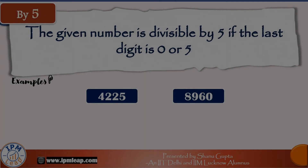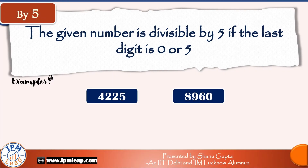The divisibility rule for 5 is very simple: a number is divisible by 5 if its last digit is 0 or 5. For 4225, the last digit is 5 — yes, divisible. For 8960, the last digit is 0 — yes, also divisible.